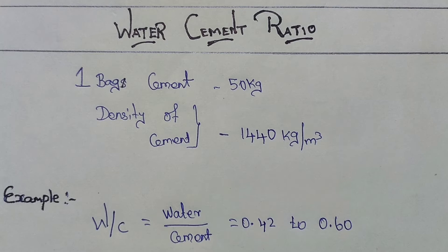The cement weight is 50 kg. The density is 1440 kg per meter. The water cement ratio is 0.42 to 0.60.